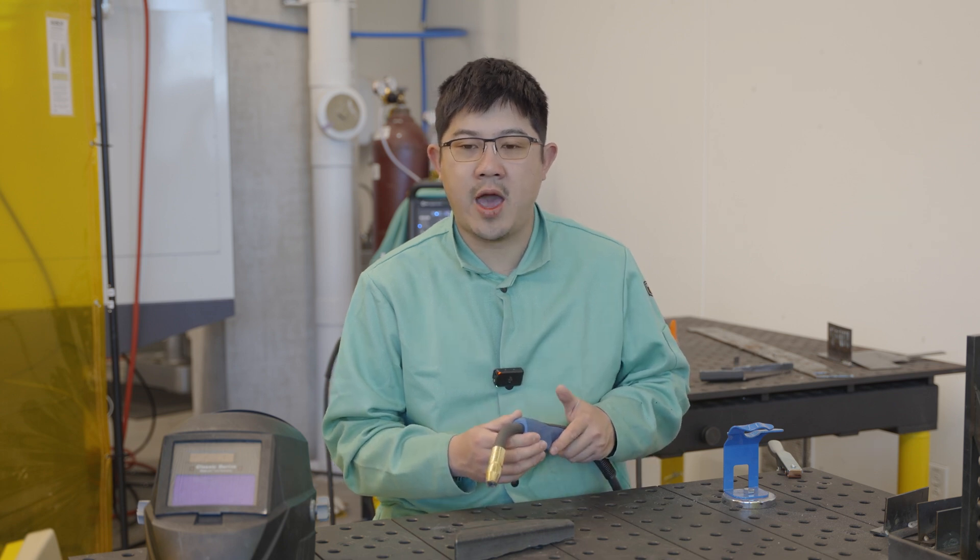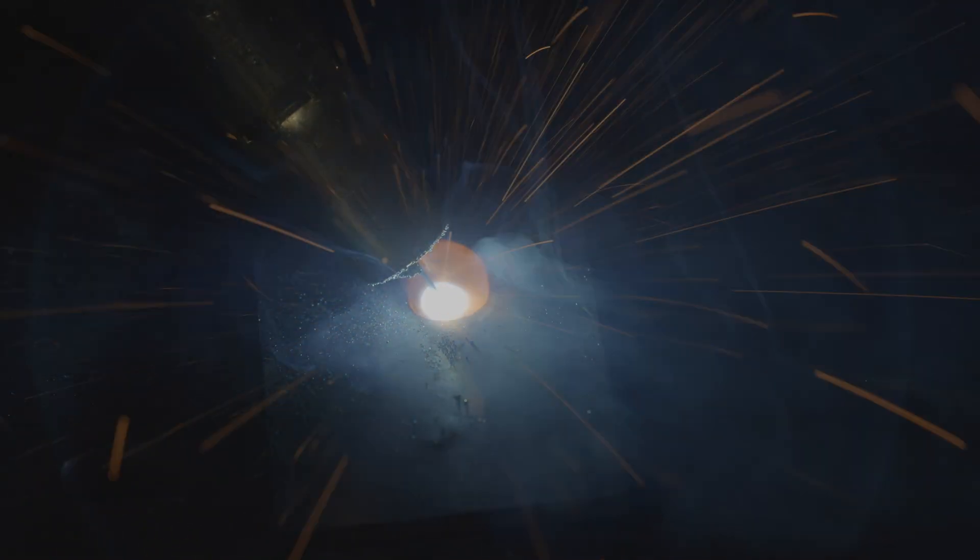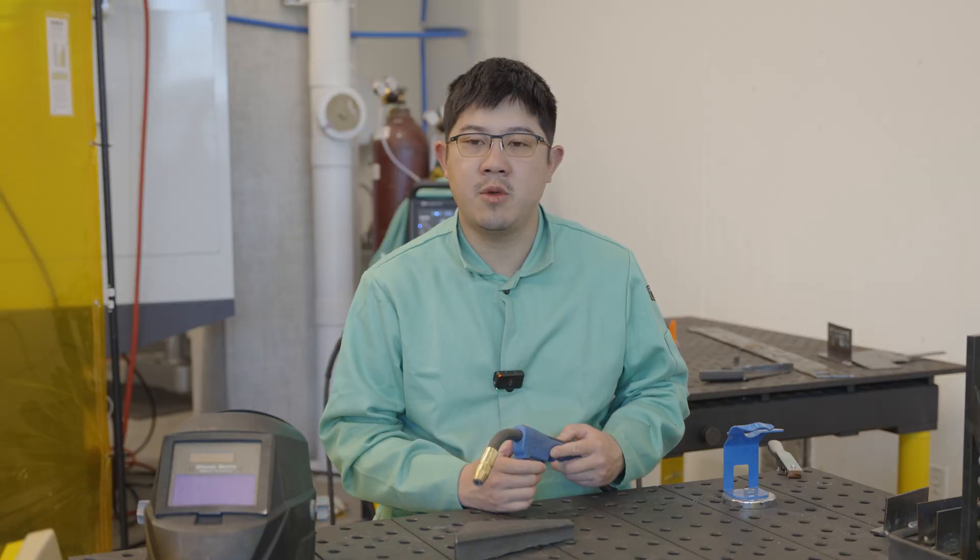And number two, it's usually going too fast or too slow. Going too fast means you're going to get a very thin weld that's not going to be very strong. Now, if you go too slow, you're going to usually get a really thick weld that could also possibly melt through your material.